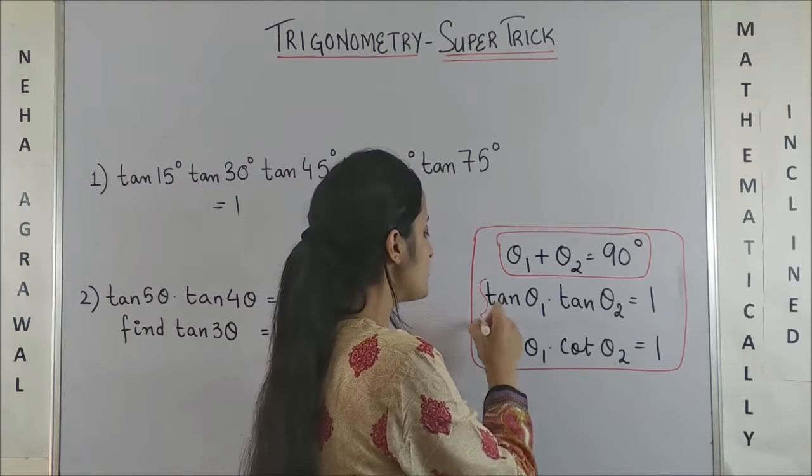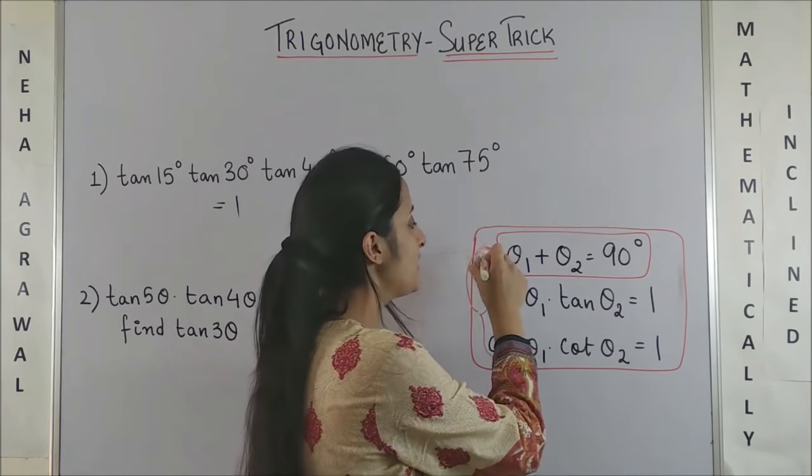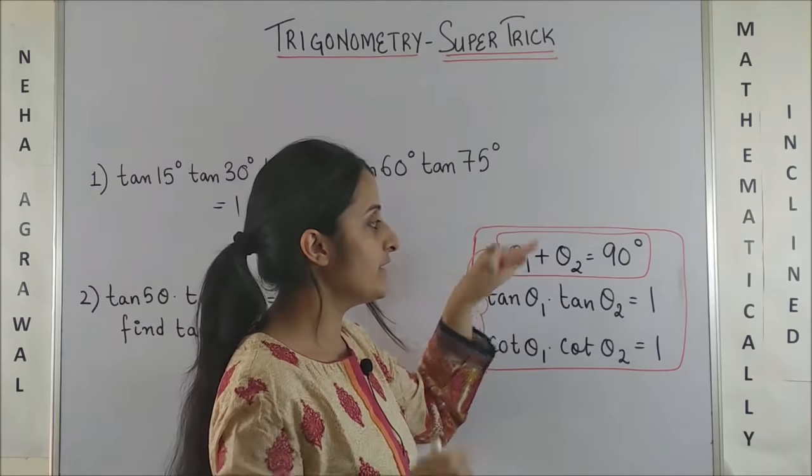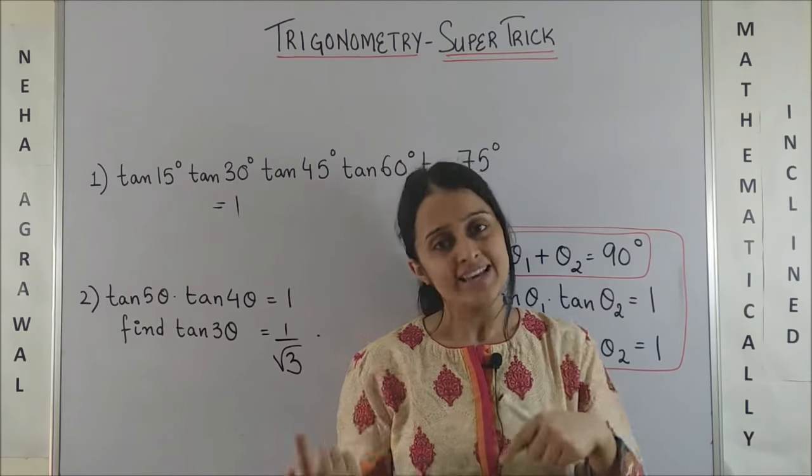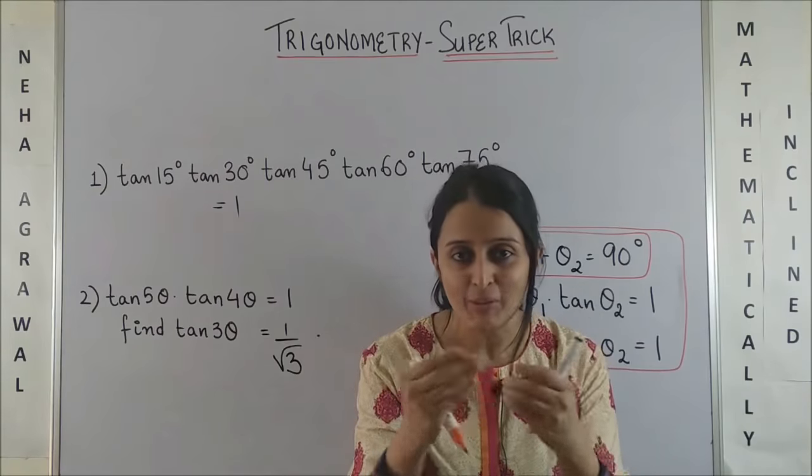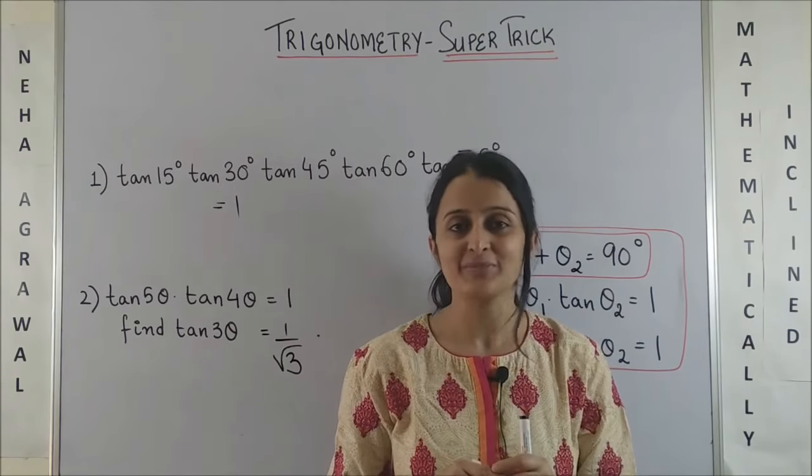And this also works the other way around. In case you are given this, then you can always move back and say θ₁ + θ₂ = 90°. Yes, this is possible in any complementary combination of trigonometric functions.